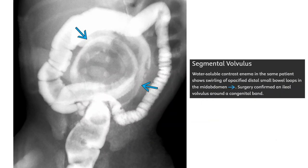Water-soluble contrast study in the same patient shows swirling opacified dilated small bowel loops in the mid abdomen. Surgery confirmed an ileal volvulus around a Meckel's diverticulum.